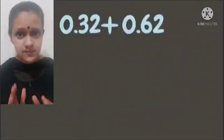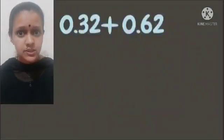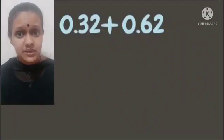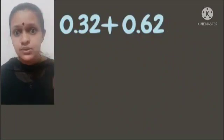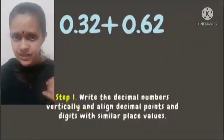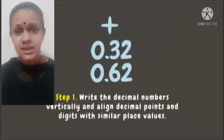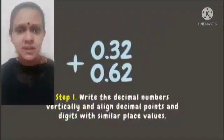Let's try this first example: 0.32 plus 0.62. First, write the decimal numbers vertically and make sure to align the decimal point and digits with similar place values.